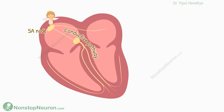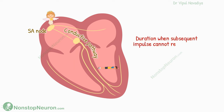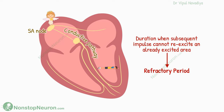To control the rhythm of the heart, there is a special system that generates impulse and spreads it all over the heart. Once an impulse passes through any area, that area becomes unresponsive to subsequent stimulation for a short period. This period, when the impulses cannot re-excite an already-excited area, is called the refractory period.